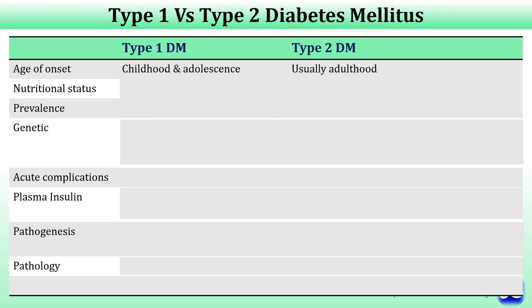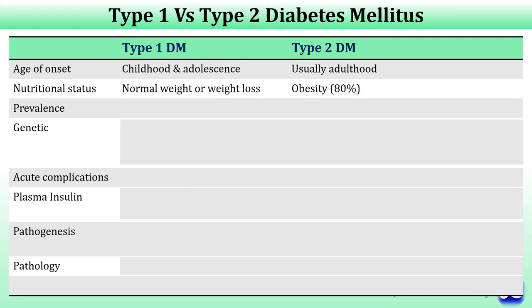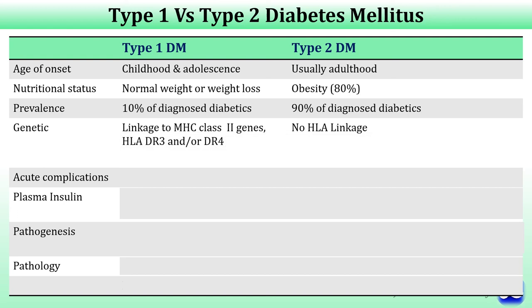Age of onset in type 1 diabetes is childhood and adolescence, while type 2 usually occurs in adulthood. Type 1 is due to beta cell destruction with absolute insulin deficiency, while type 2 is characterized by insulin resistance and relative insulin deficiency. Patients with type 1 diabetes are of normal weight or may have weight loss, while type 2 is associated with obesity. Type 1 diabetes accounts for 10% and type 2 for 90% of diagnosed cases. There is genetic linkage to MHC class 2 genes in type 1 diabetes, and also linkage to polymorphisms, but no HLA linkage in type 2 diabetes.